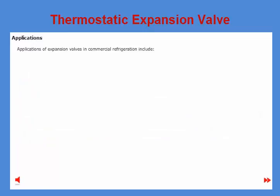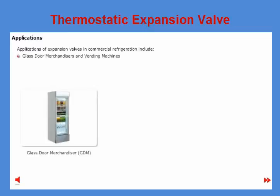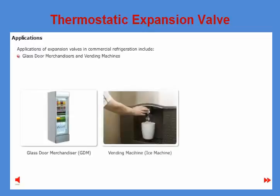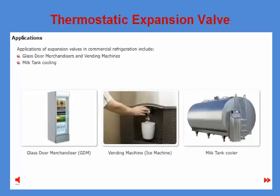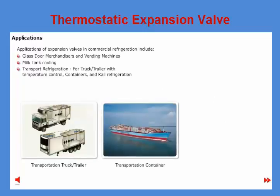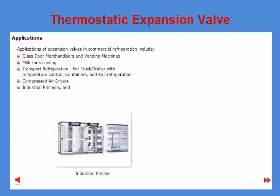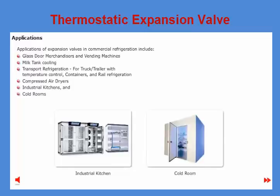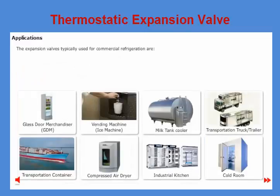Typical applications for expansion valves in the commercial refrigeration section include glass door merchandisers and vending machines, milk tank cooling, transport refrigeration for trucks or trailers with temperature control, containers, railway refrigeration, compressed air dryers, industrial kitchens, and cold rooms. The expansion valves typically used for commercial refrigeration are T2, TE2, TU/TC, TGE, and TE5255.